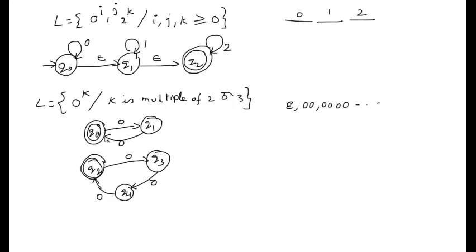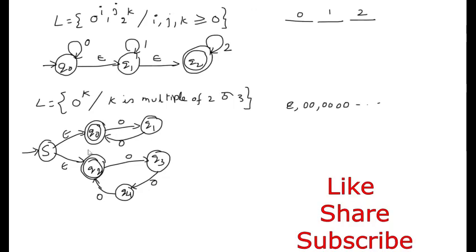Now we need to combine these two automata. The first represents k as a multiple of 2 and the second represents k as a multiple of 3. To join them using NFA with Epsilon transitions, we take a new starting state S, and with Epsilon transitions connect S to both automata. These NFAs with Epsilon transitions can then be converted to an NFA, and that NFA can be converted to a DFA.